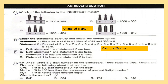Question 32: Study the statements carefully and select the correct option. Statement 1: Place value of 6 in the addition of 4029 and 588 is 6. Statement 2: Product of 9×8×7×6×5×4×3×9×8×7×6×5×0×4×3×2 is 1378.